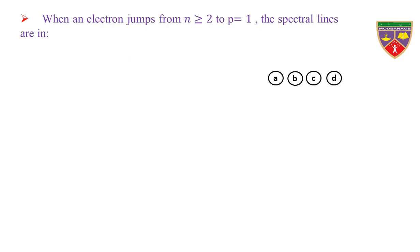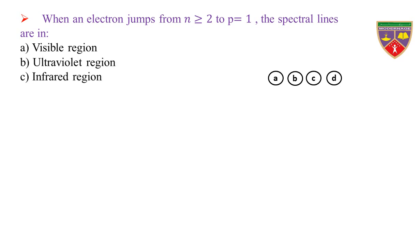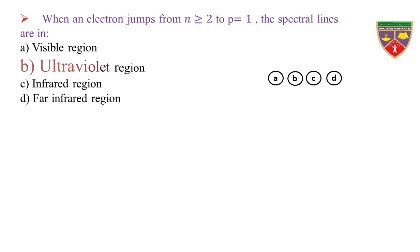When an electron jumps from n ≥ 2 to p = 1, the spectral lines are in: Option A, visible region; Option B, ultraviolet region; Option C, infrared region. The key is ultraviolet region. Therefore, the correct option is B.